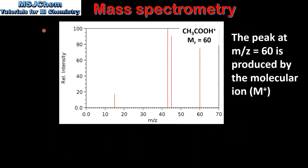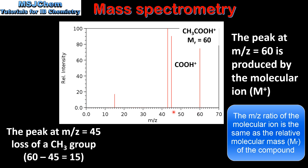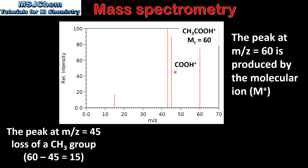Looking at the fragmentation pattern for ethanoic acid, we start with the peak on the right at a mass to charge ratio of 60, which is produced by the molecular ion. Moving from right to left, the next peak occurs at a mass to charge ratio of 45, representing the fragment COOH+. If we subtract 45 from 60 we get 15, and using table 28 of the data booklet, we can see this corresponds to the loss of a CH3 group.